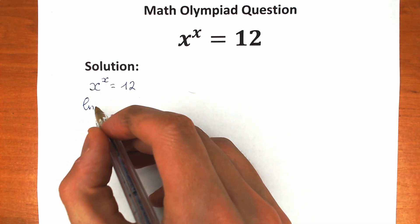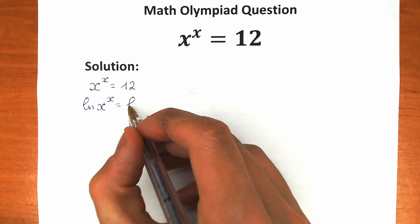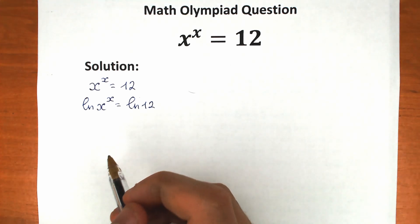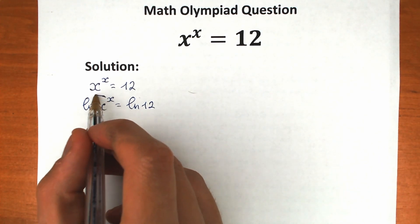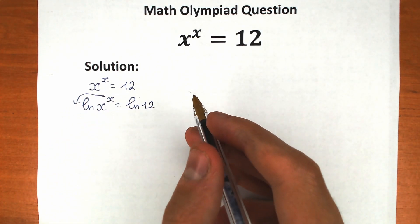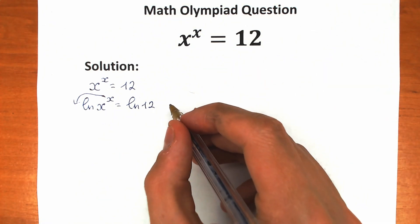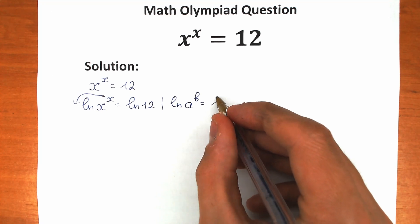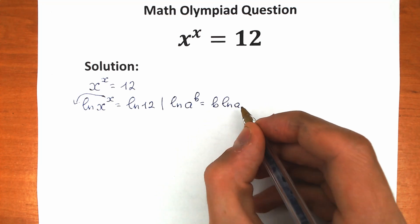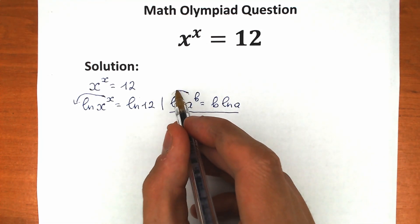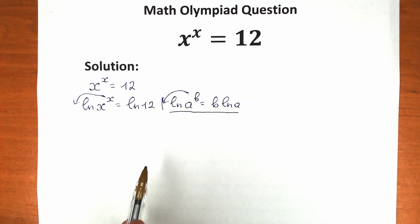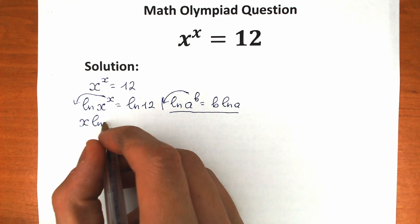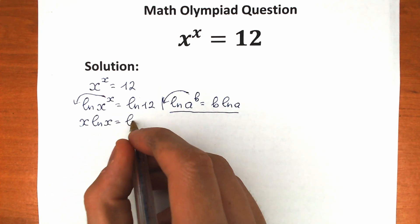Applying natural log on both sides gives us ln(x^x) = ln(12). We can use the well-known natural log property: if we have ln(a^b), we can write it as b times ln(a). So we bring the exponent down and get x times ln(x) = ln(12).